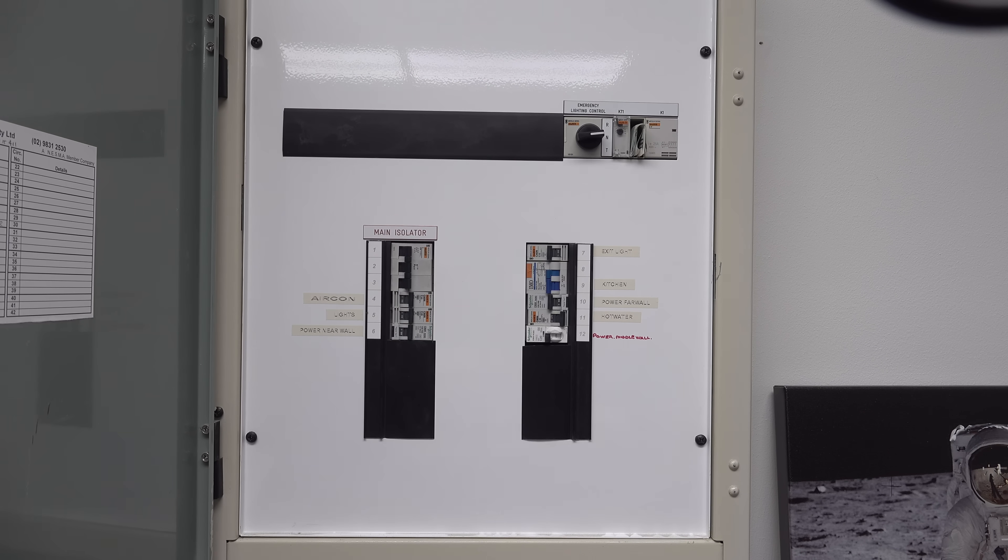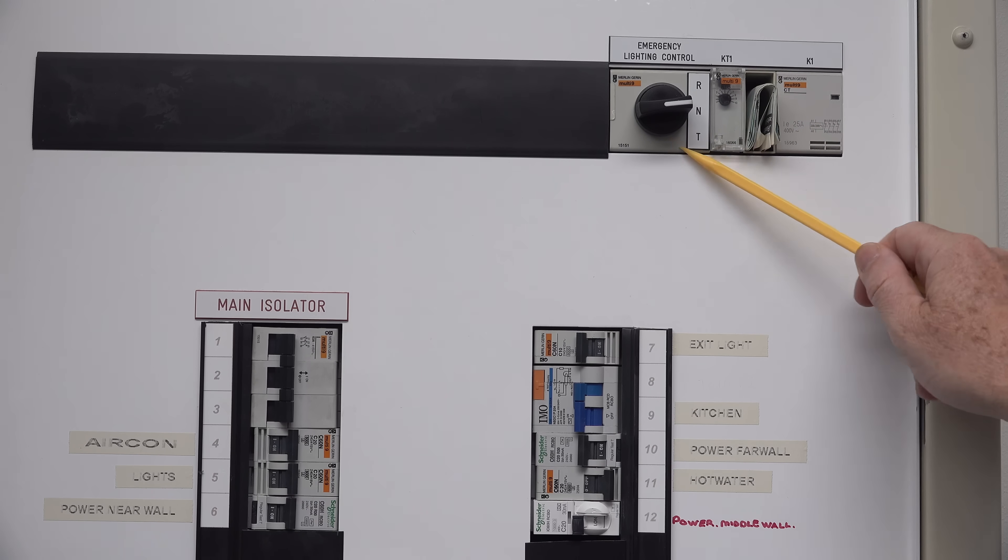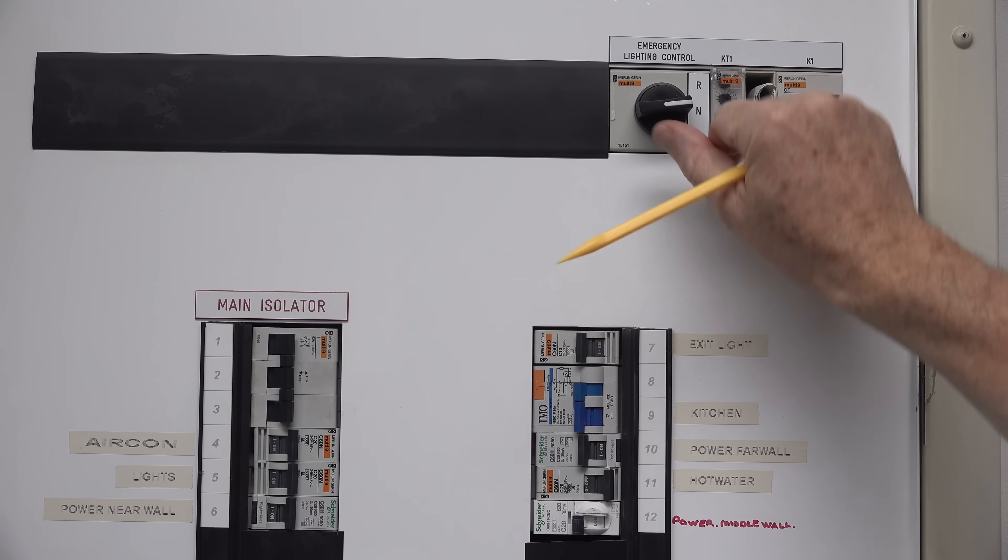There you go. Not a huge amount of circuits inside this thing. What we've got here is an emergency lighting control because I've got an exit light. It's just a requirement. Even though there's only one door here, I need an exit light.